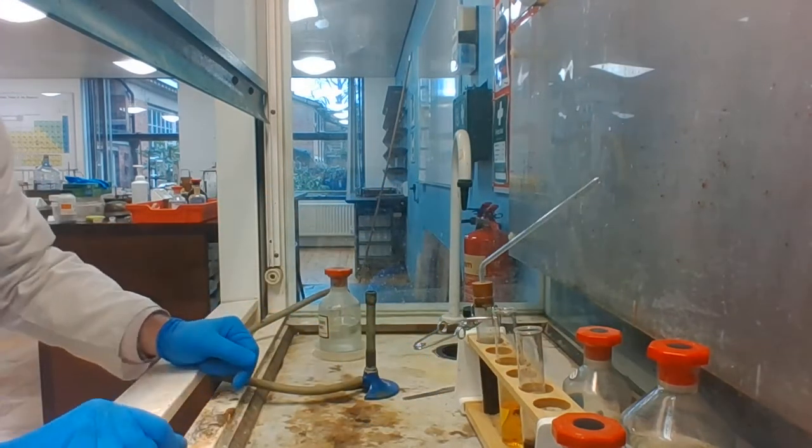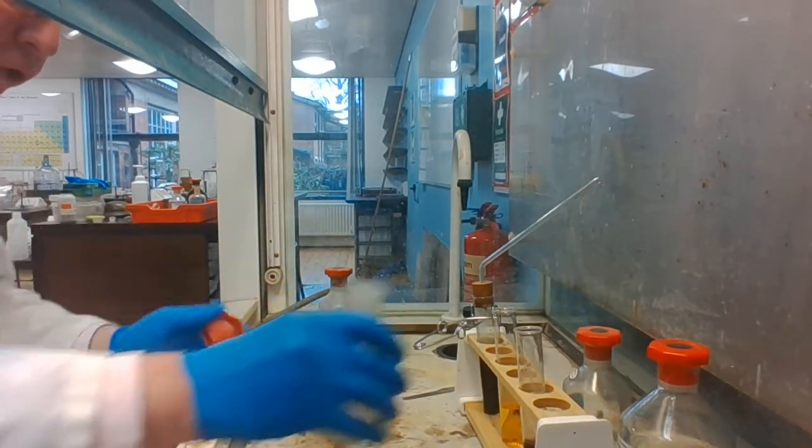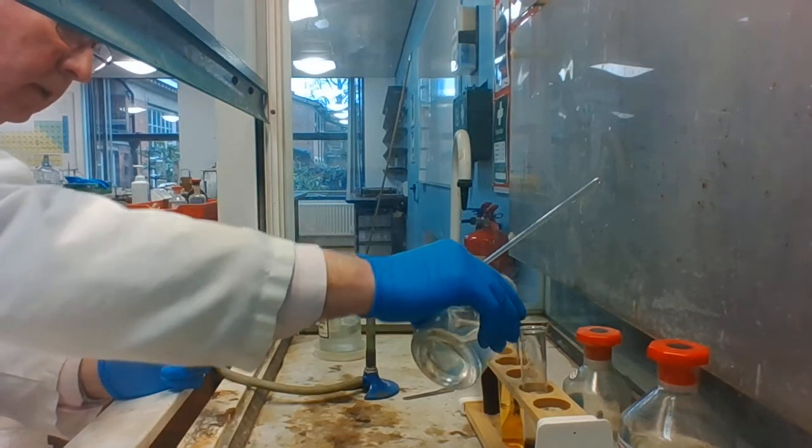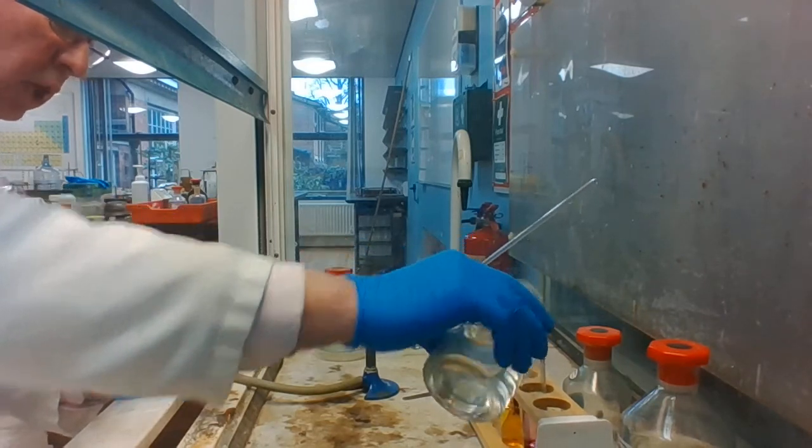To try and show that the halogen has been produced, I'm going to add some cyclohexane to both tubes. Cyclohexane is immiscible with the aqueous solution.